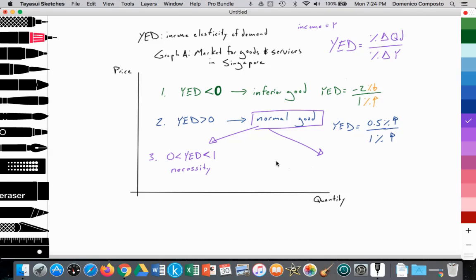If we get a value that is greater than one, your income is rising, but your consumption of a particular good is rising more rapidly. That's what we call a luxury good. These are goods that you don't need. So luxury goods.